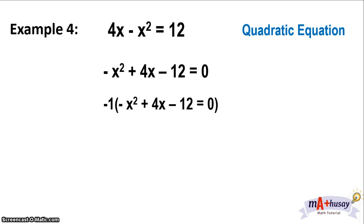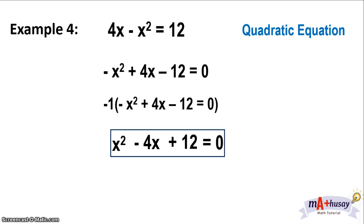This is not in standard form yet because the leading term, x squared, is still negative. So we multiply by negative 1: negative 1 times negative x squared is x squared, negative 1 times positive 4x is negative 4x, and negative 1 times negative 12 is positive 12, which equals 0. This is now written in standard form, where A is equal to 1, B is equal to negative 4, and C is equal to 12.